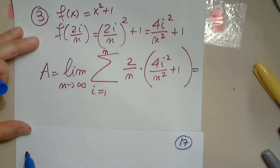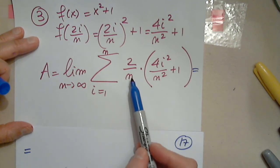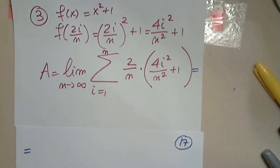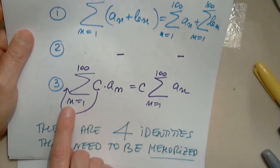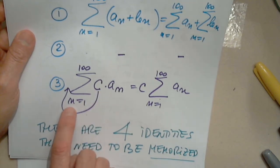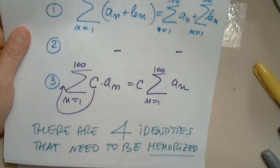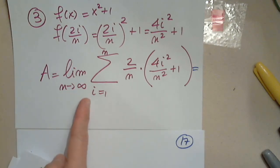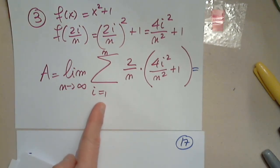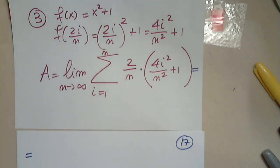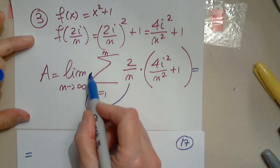Okay, so we'll continue. First of all, remember we had a property about an hour ago where the constant, we said a constant goes out. Here it is. If the constant does not depend on n or the index, then the constant goes in front. So 2 over n has nothing to do with i, it's a constant. It will go in front of the summation notation.